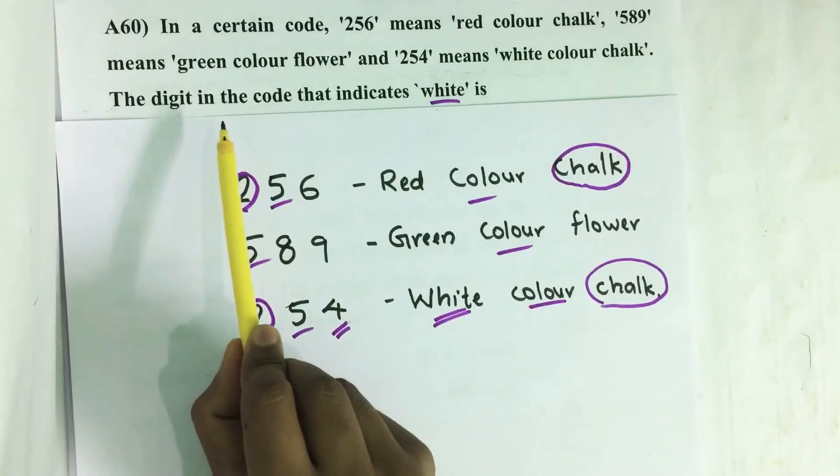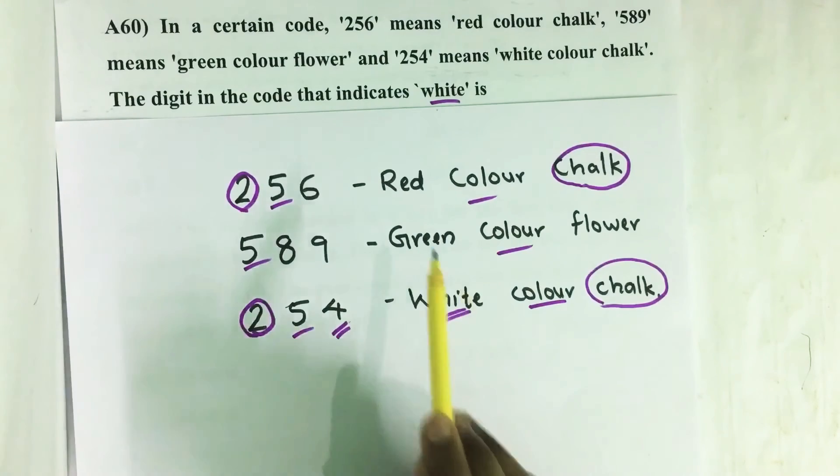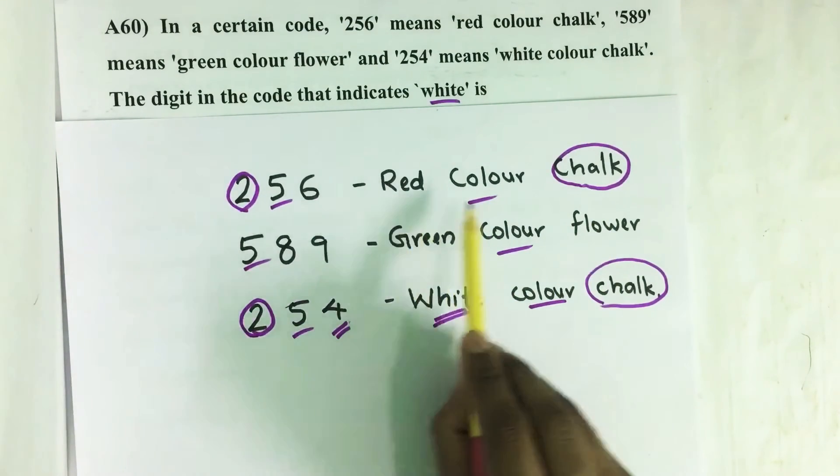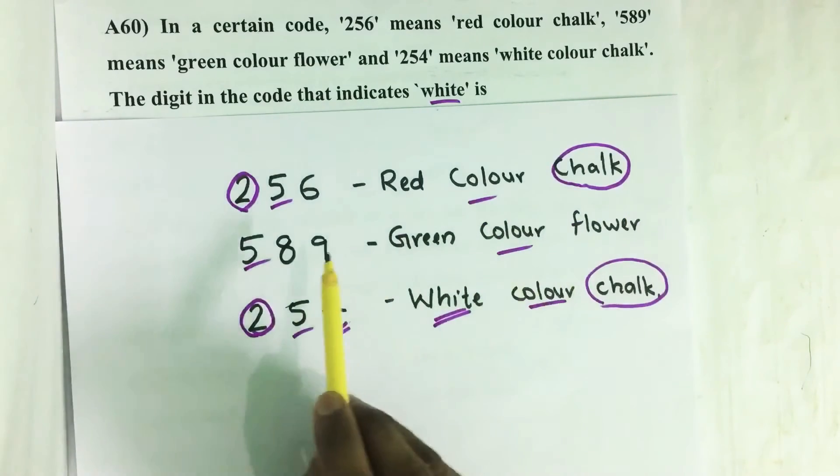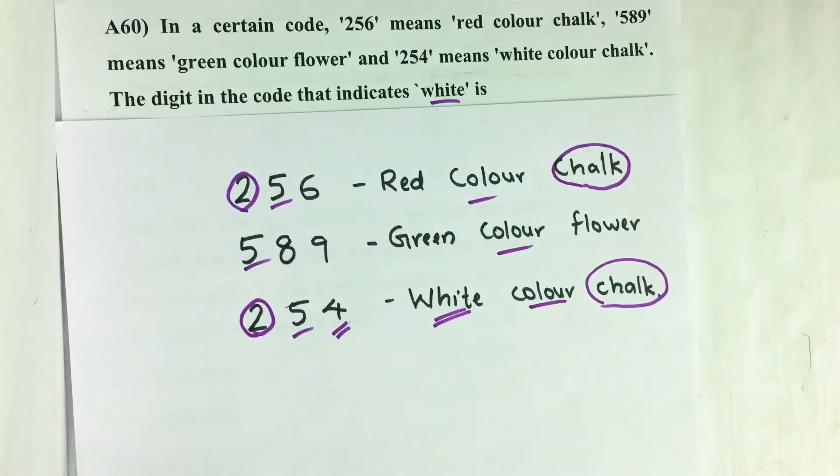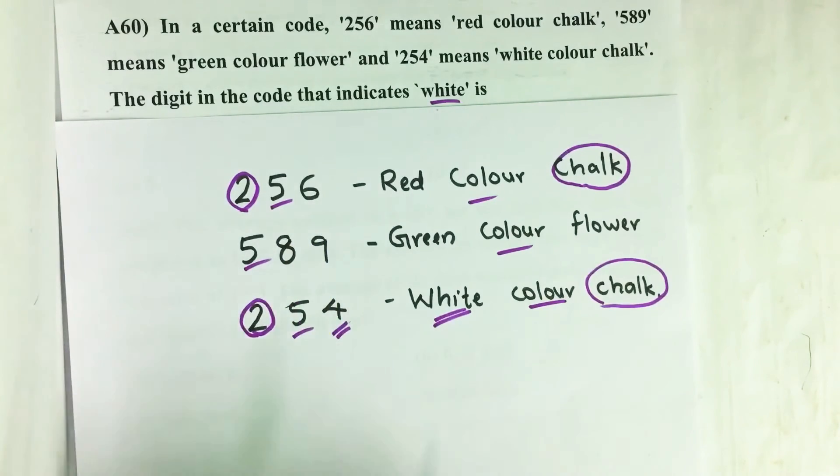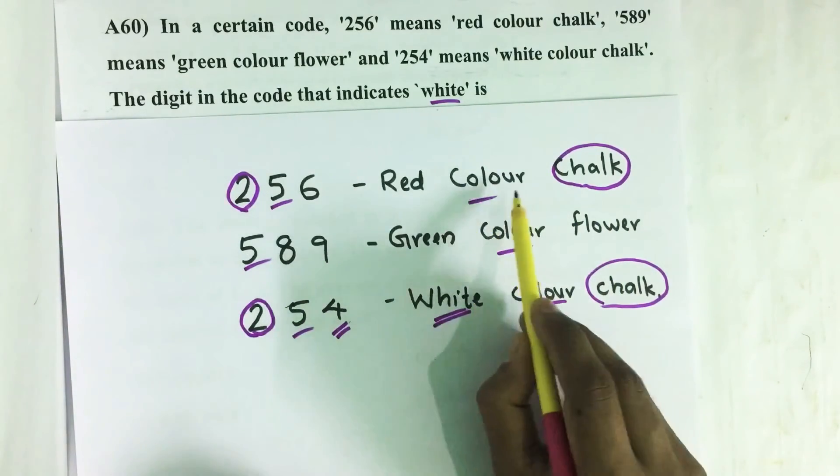The digit in the code that indicates white is - so here we have three sentences and these three sentences are coded with three three-digit numbers. Now see, all these three sentences, in this 'color' is common.